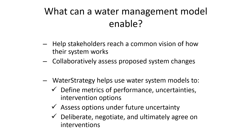Water system models can help achieve better use and governance of limited water resources. They help stakeholders reach a common vision of how their system works and collaboratively assess proposed system changes. Water strategy helps use system models to define metrics of performance, uncertainties, and intervention options, assess these options under future uncertainty, and deliberate, negotiate, and ultimately agree on the interventions.